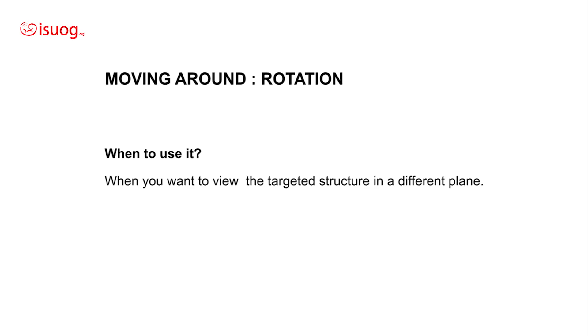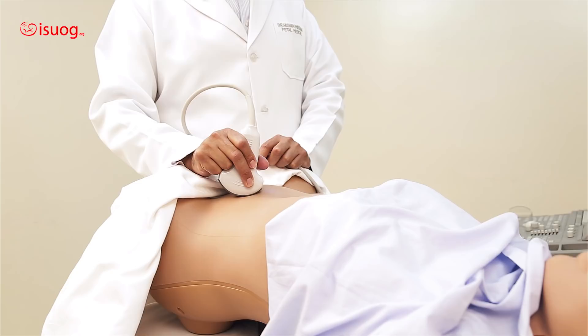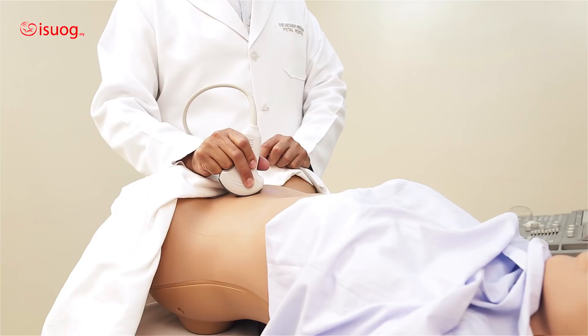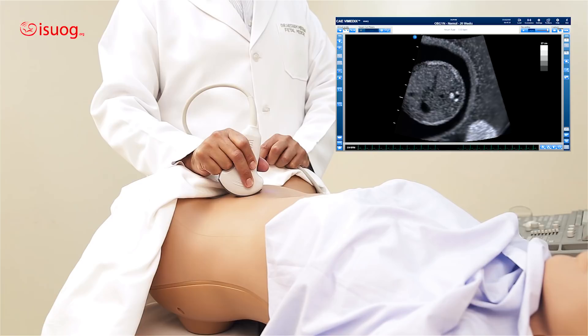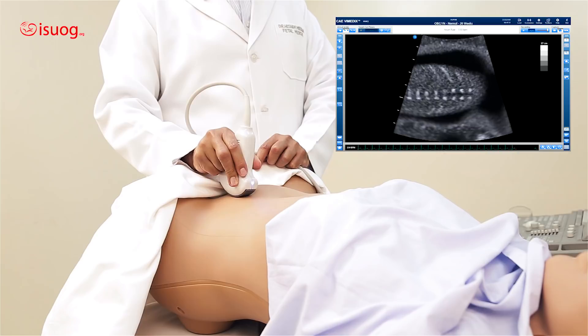We use rotation when we want to view the target structure in a different plane. If you look at the screen, you can see the plane of the abdominal circumference, and you can see the vertebrae in an axial view. Now, if I want to see it in a coronal view, all I need to do is rotate. And as you can see, we are now looking at the vertebrae in a coronal view.